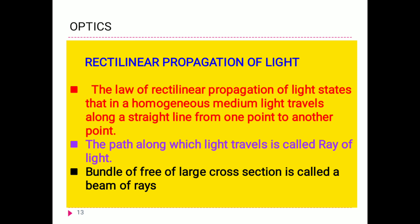The next concept is rectilinear propagation of light. It states that in a homogeneous medium, light travels along a straight line from one point to another. The path along which light travels is called a ray of light. If a number of rays of light are moving in a cross-sectional area, then it is called a beam of rays, or a bundle of rays.